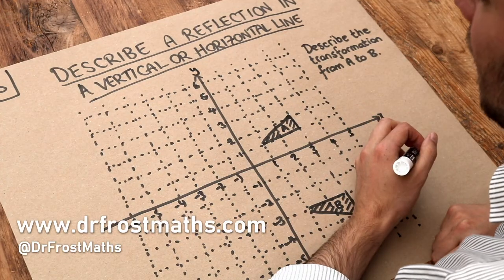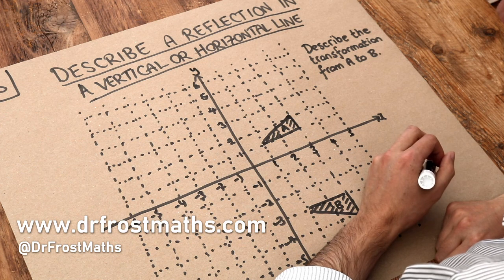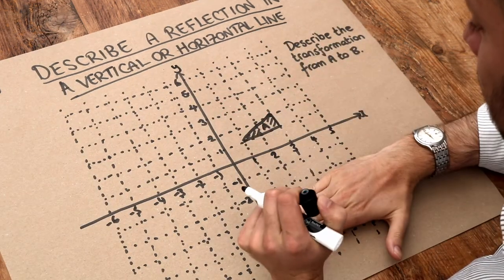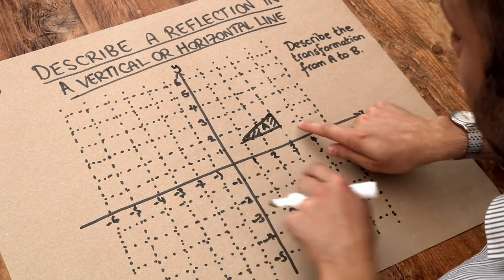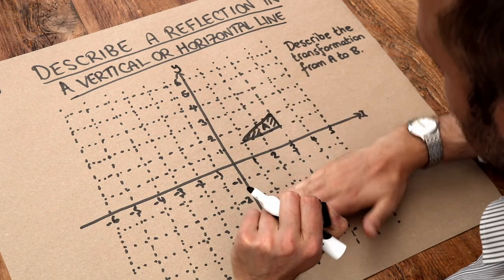Hello and welcome to this Dr.RossMath's key skill video on describing a reflection in a vertical or horizontal line. A reflection is just when a shape is flipped over. You can see this is flipped over because this is pointing up whereas this is pointing down. So the direction is reversed.